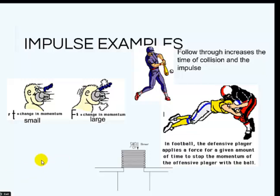So here are some impulse examples. In the first we have a baseball player and he has follow through. And the follow through is because he is going to apply that force over a period of time. Extend the time of the collision. And that way he can change the momentum of that ball. He can make it go faster once it leaves the bat.